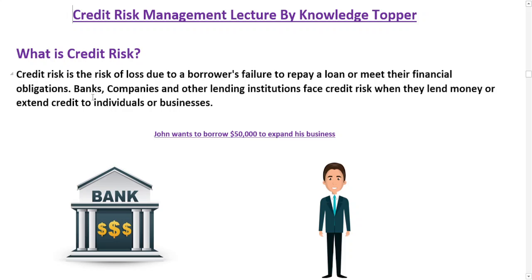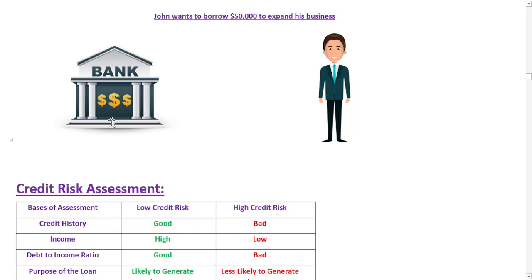Let's understand credit risk with an example. Imagine you are a banker, and a small business owner named John comes to you to apply for a loan. John wants to borrow fifty thousand dollars to expand his business. As a banker, you will need to assess John's credit risk before approving his loan application.